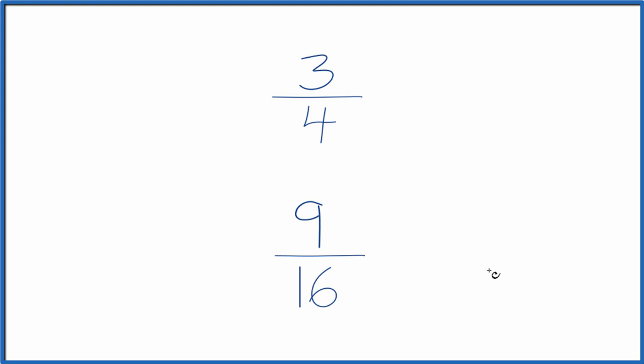If we have the denominator the same, we just compare the numerators to figure out whether 3 fourths is greater than 9 sixteenths, or 9 sixteenths is greater than 3 fourths.